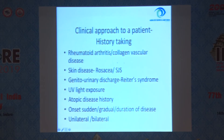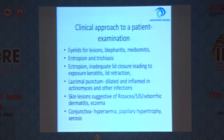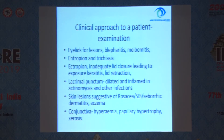For history taking, it is important to take systemic history like rheumatoid arthritis, collagen vascular disease, skin diseases like rosacea and Stevens-Johnson syndrome, genitourinary discharge in Reiter's syndrome, UV light exposure, atopic disease history, sudden onset or gradual onset of disease, and whether unilateral or bilateral. Eyelids have to be examined properly for blepharitis, meibomitis, entropion and trichiasis. Inadequate lid closure leading to exposure keratitis. Lacrimal punctum is dilated and inflamed in actinomyces and other infections. And skin lesions suggestive of rosacea, SJS and seborrheic dermatitis.